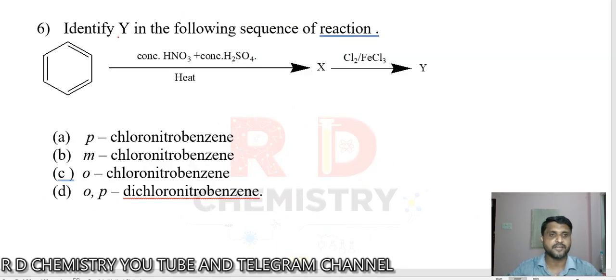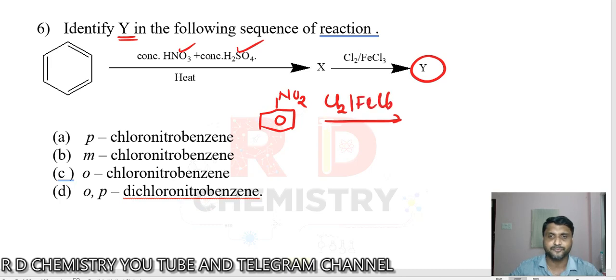Question number six: Identify Y in the following sequence of reaction. We have benzene. When benzene is treated with nitric acid and sulfuric acid, nitration occurs and we get nitrobenzene. Then treat with chlorine in the presence of ferric chloride.